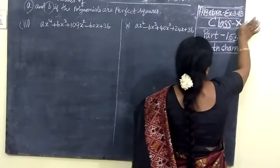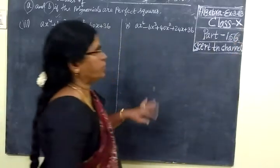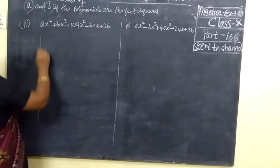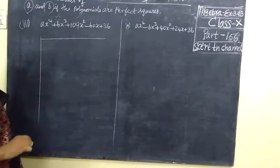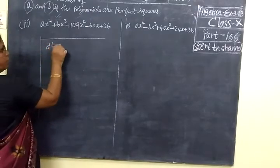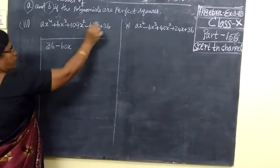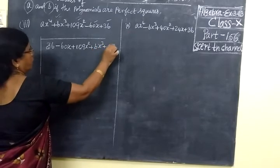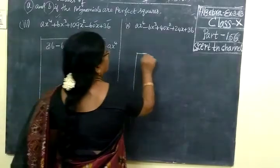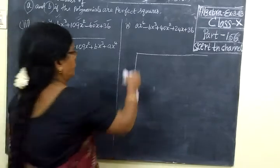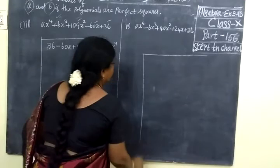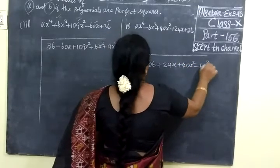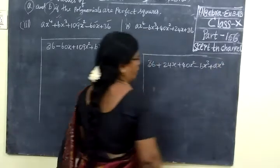Good evening students. Now we are seeing path 150, exercise 3.13. Last class, second class, third and fourth — last class we have seen 2 problems. So we just write it as 36 minus 60, then 109 x squared plus b x cubed then a x power 4. Here also in the same way I will write it as 36 plus 24x plus 40x squared minus bx cubed plus ax power 4, and these unknowns we have to find.